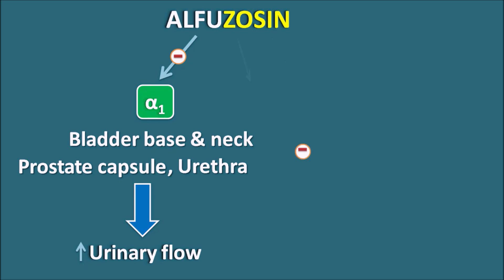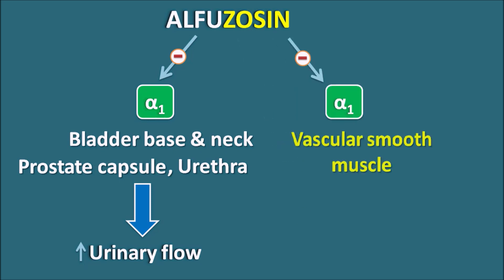This drug also blocks alpha-1 receptors located at other organs, particularly vascular smooth muscle. This results in hypotension, which may lead to syncope — that is, fainting in patients. The therapeutic benefit of Alfuzosin is mainly attributed to its action on alpha-1 receptors present at the bladder as well as the prostate tissue.